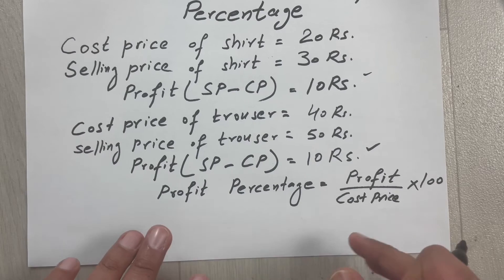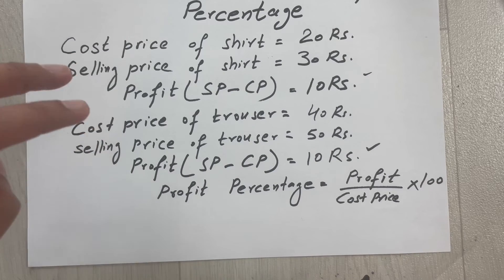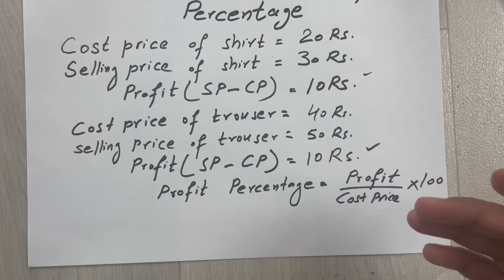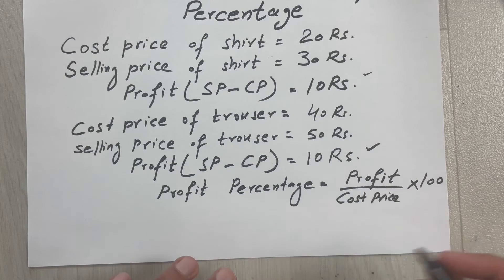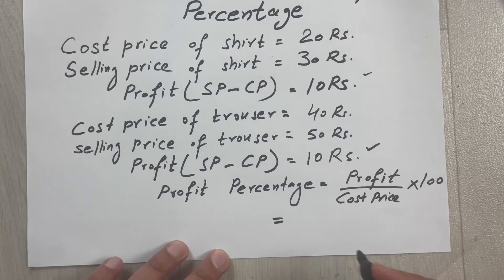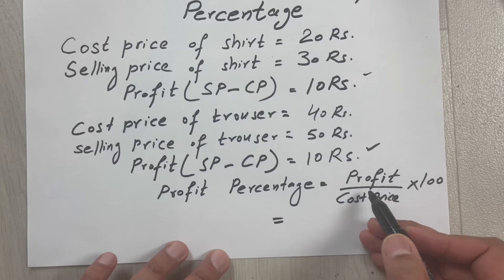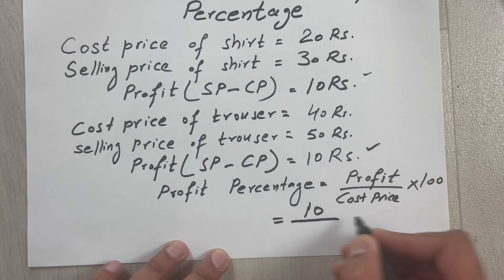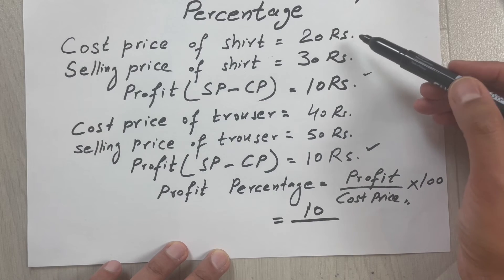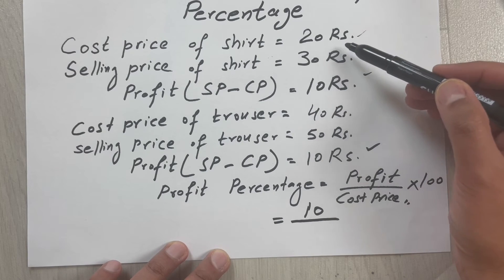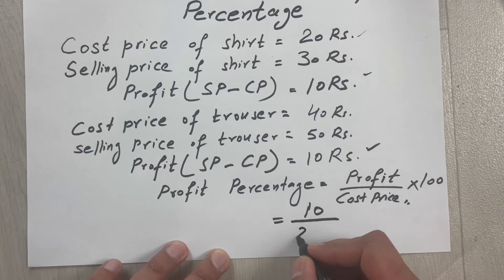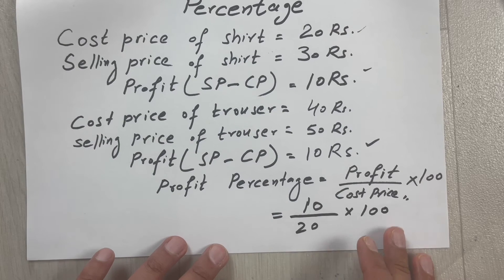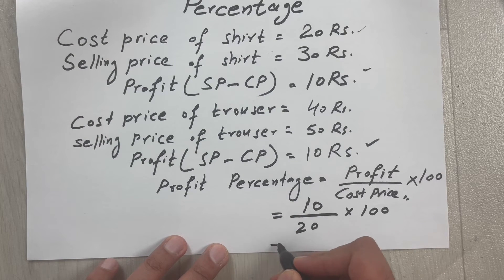Now we will put the values for both deals to figure out which deal makes the bigger profit. For the first deal, the profit is 10 rupees, so we put 10 over here, and we divide it by the cost price, which in the first deal was 20. We multiply by 100, and the answer will be 50 percent.